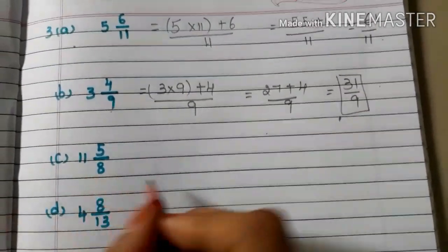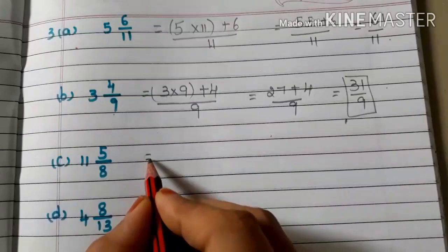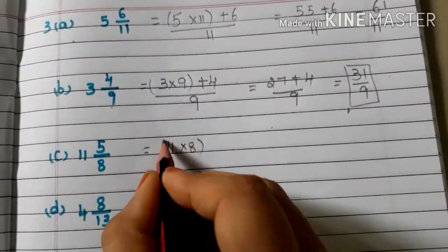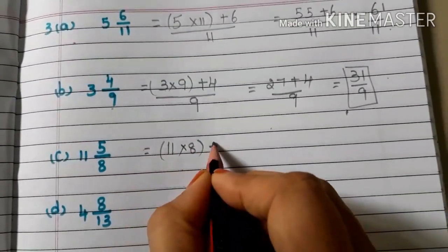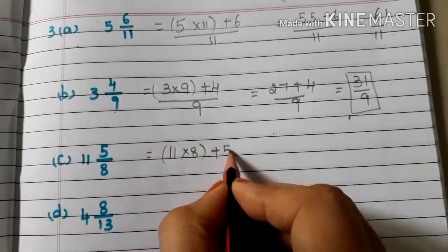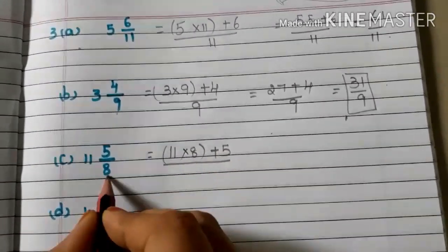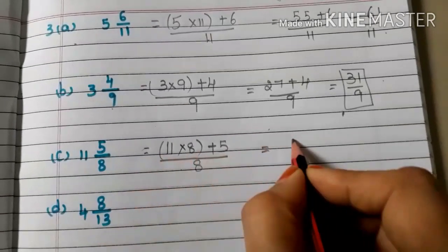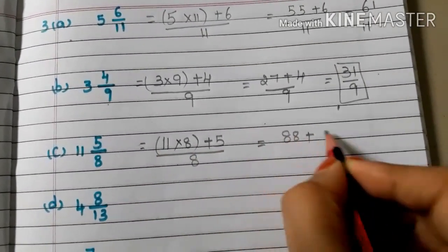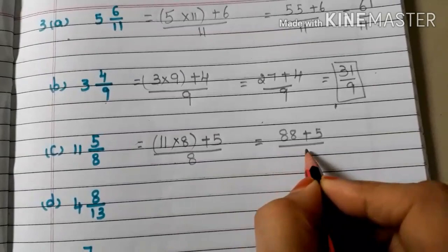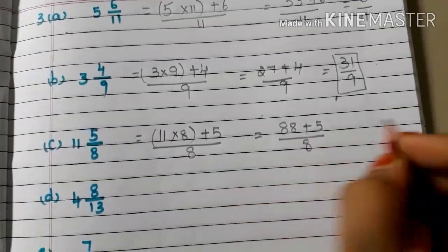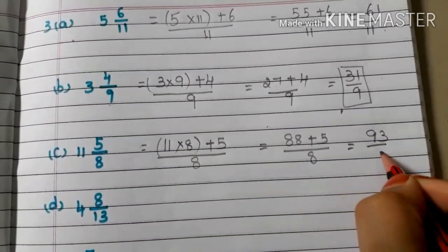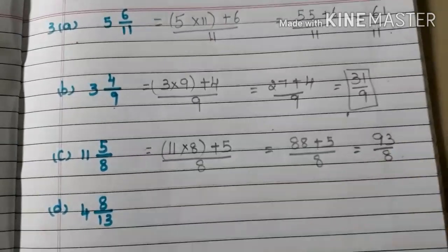C: 11 and 5/8. Whole number into denominator plus numerator, by denominator 8. 11 eights are 88, plus 5, by 8. 88 plus 5 is 93/8.